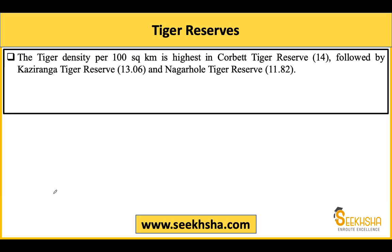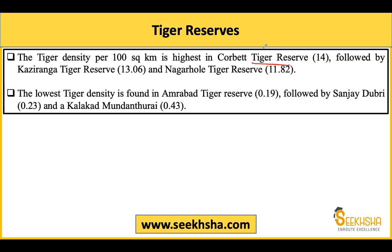Tiger density ka matlab hai kitnay tigers hain per 100 square kilometer area mein. Sabse zyada highest density tiger ki Corbett Tiger Reserve mein hai - Corbett ke andar har 100 square kilometer mein on an average 14 tigers milenge, followed by Kaziranga aur Nagarhole. Lowest tiger density Amrabad Tiger Reserve ke andar hai - jahan par 0.19 ki tiger density hai per 100 square kilometer.